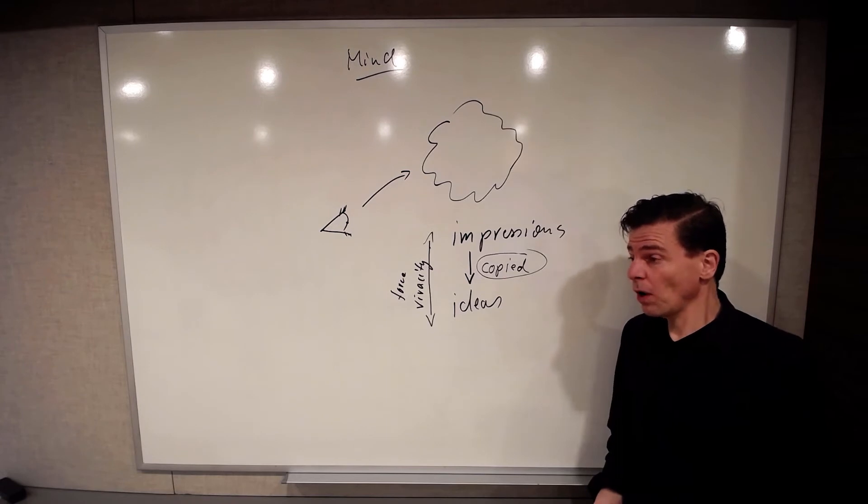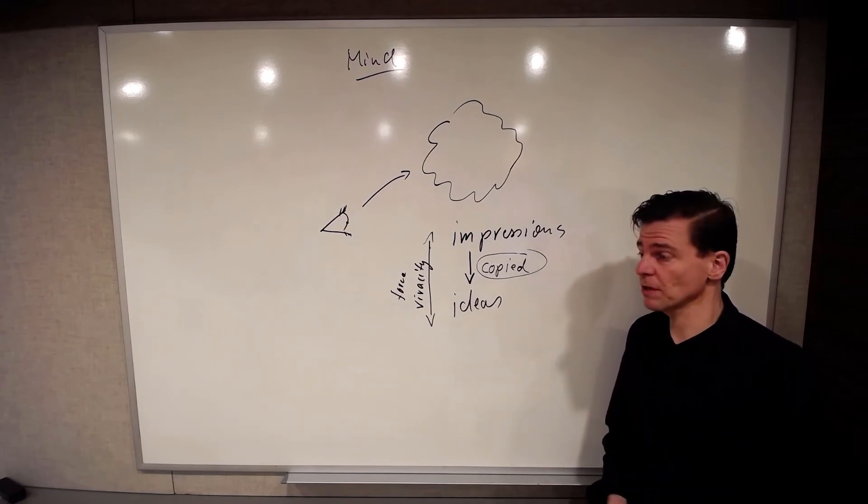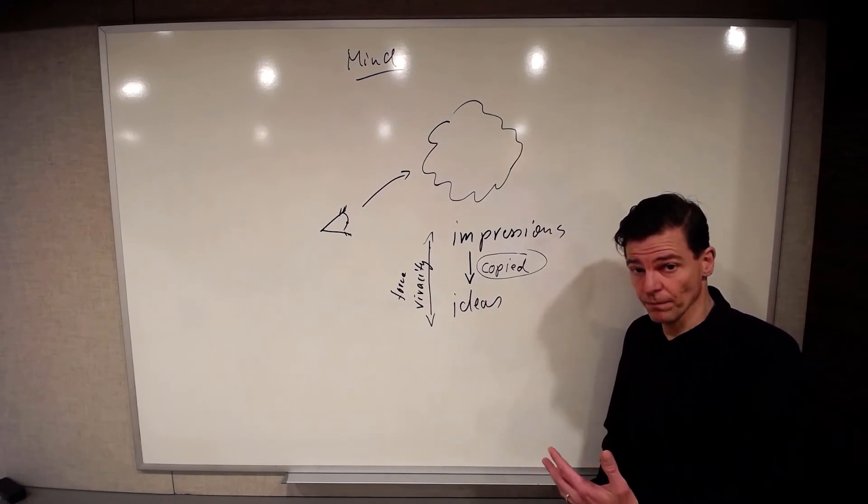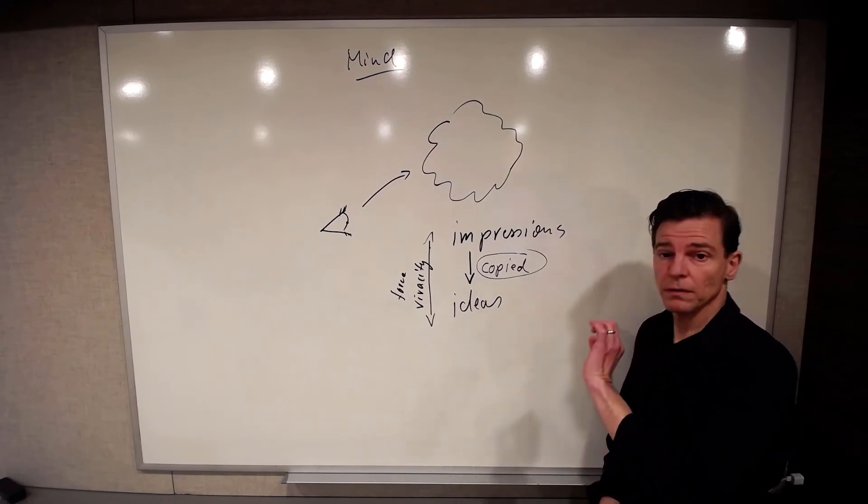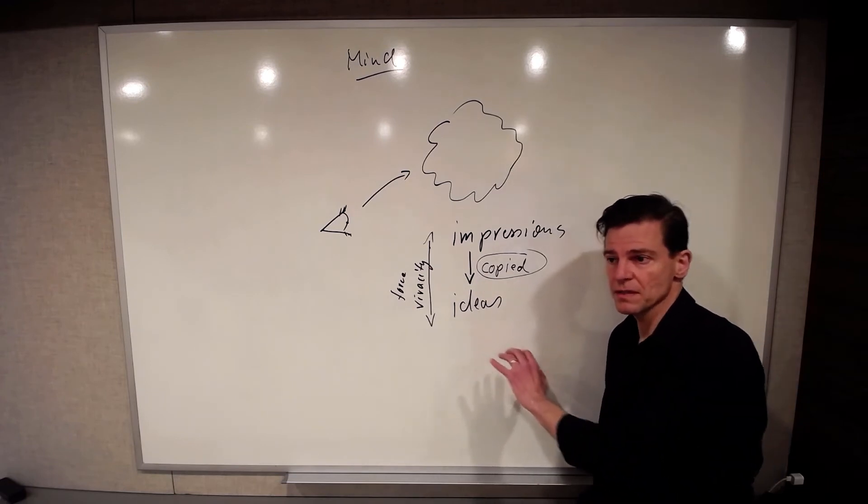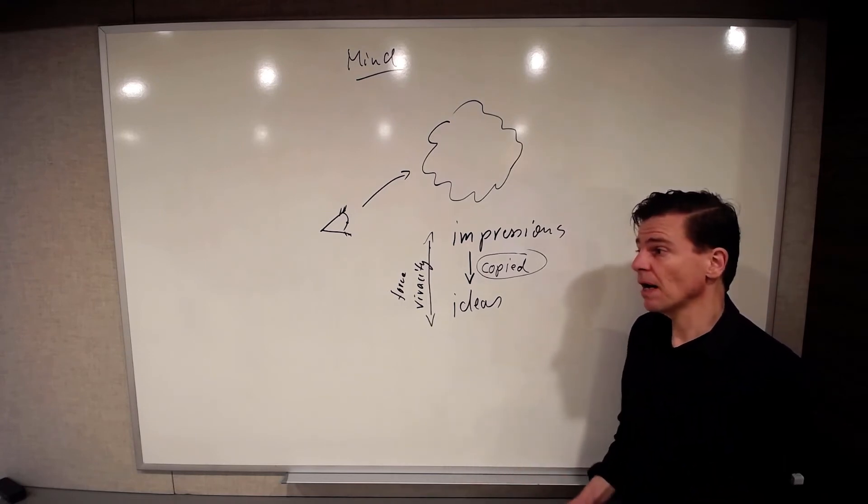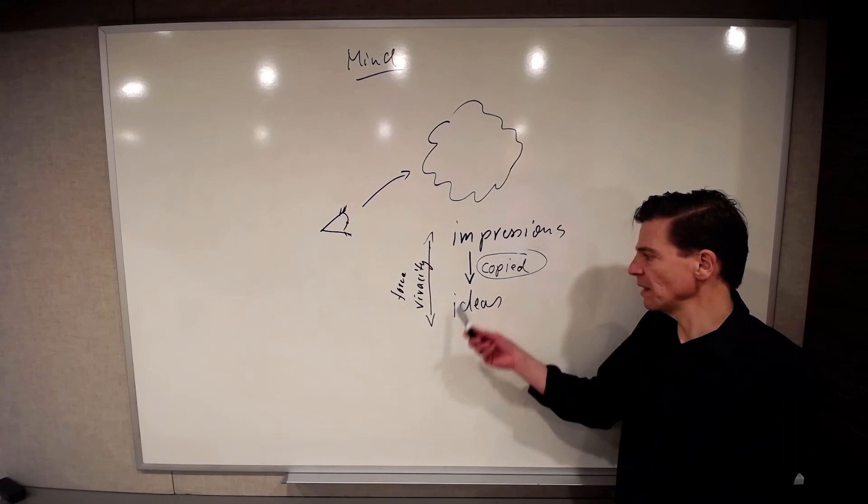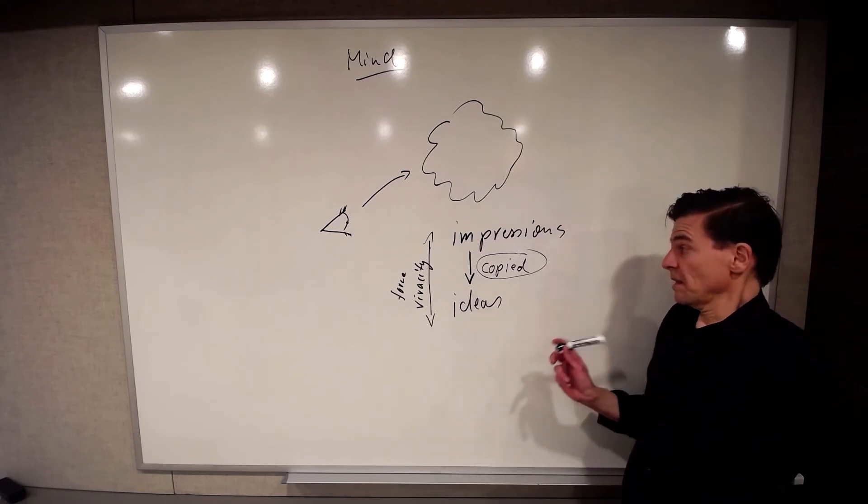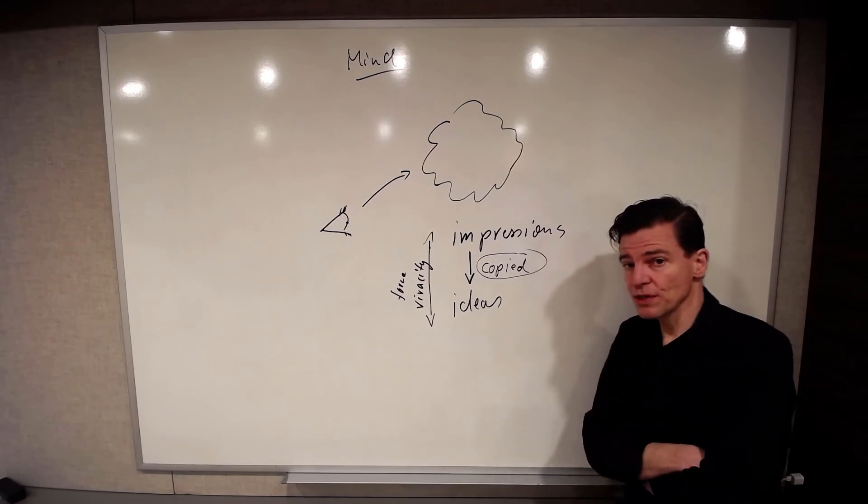All I find when I introspect is there's a mental universe going on, but I find that certain of these goings on are very forceful. Those are the ones that I call impressions and others are less forceful. Those are the ones I call ideas. And then he has a theoretical principle that says, how come that's somewhat as forceful? And it says, well, they must have been copied from preceding impressions.